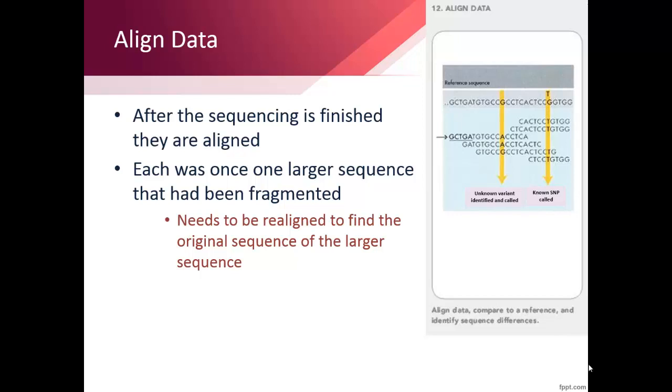SNPs are also called by the alignment tools as well. SNPs stand for single nucleotide polymorphisms, and are DNA sequence variations occurring commonly within a population in which a nucleotide of either adenine, thymine, cytosine, or guanine in the genome differs between members of a biological species or paired chromosomes.